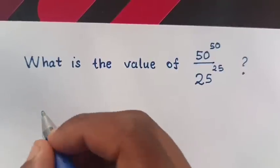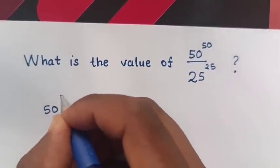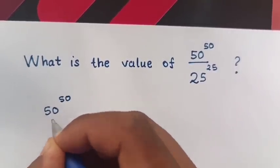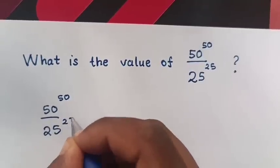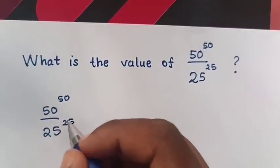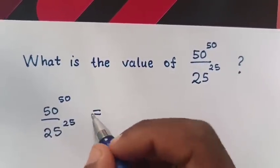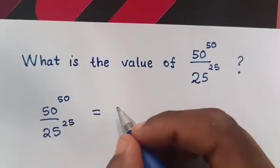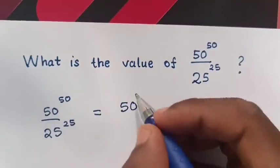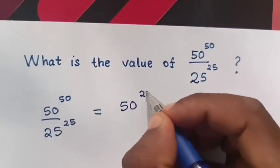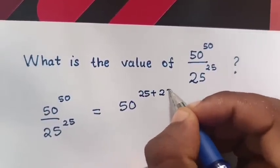From 50 power 50 over 25 power 25 is equal to — here, 50 power of 50 is the same as 25 plus 25.